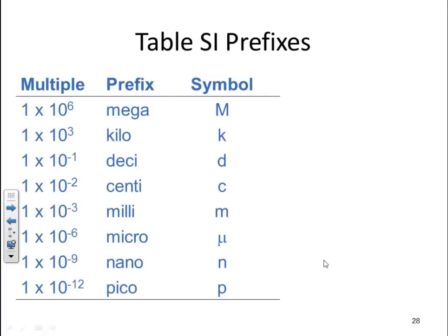Here is a table of SI prefixes. You have mega, which is a capital M, which is equivalent to 1 times 10 to the 6th. Kilo, 1 times 10 to the 3rd. Deci, 1 times 10 to the negative 1. Centi, 1 times 10 to the negative 2nd. Milli, 1 times 10 to the negative 3rd. Micro, 1 times 10 to the negative 6th. Nano, 1 times 10 to the negative 9th. Pico, 1 times 10 to the negative 12th.